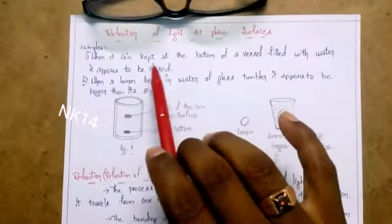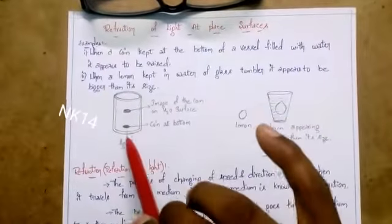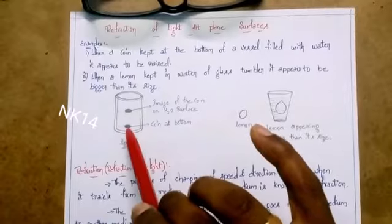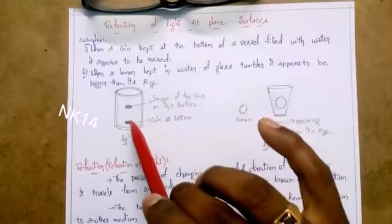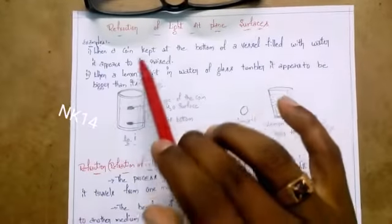When a coin is kept at the bottom of a bezel filled with water, it appears to be raised. This is the diagram. The coin is actually at the bottom of the bezel, but due to refraction, the coin appears to be on the top of the water surface. This is the first example.